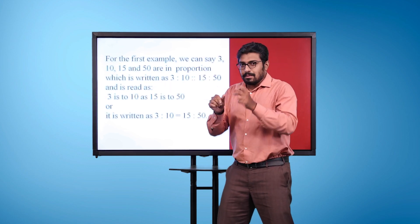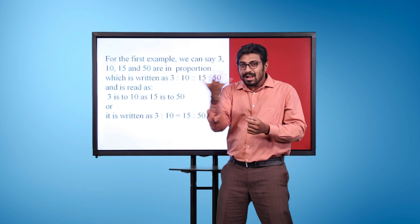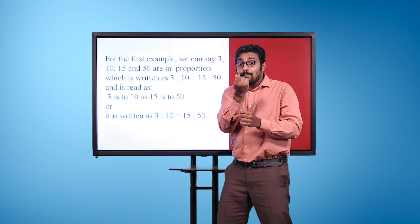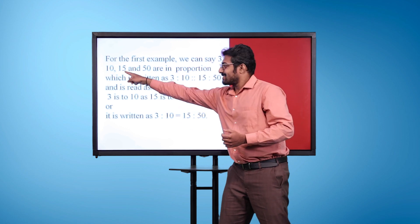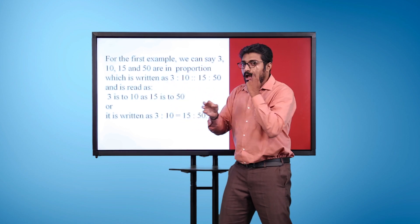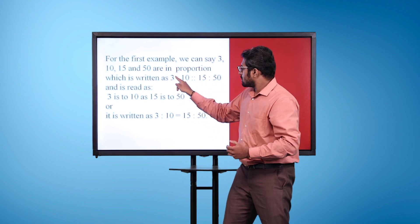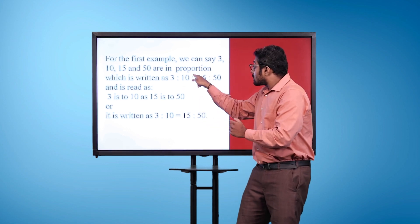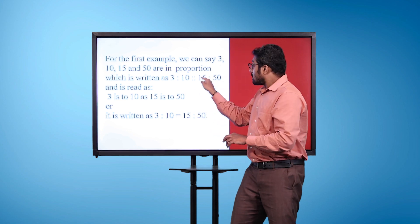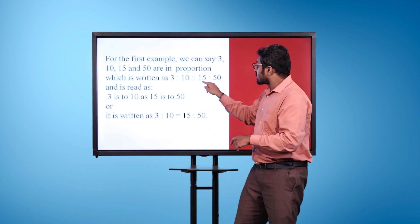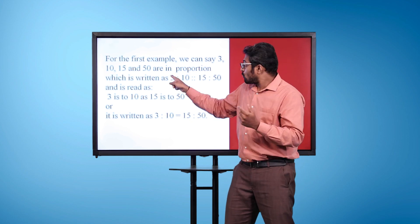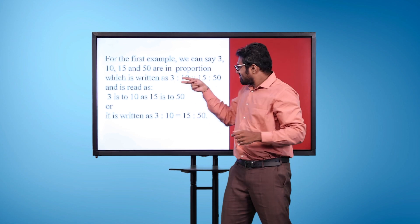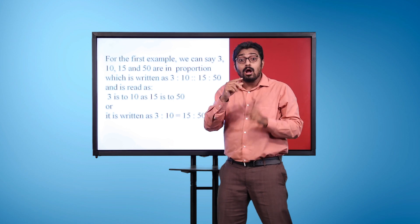For the first example, we can say 3, 10, 15, and 50 are in proportion, which is written as 3 is to 10, double colons, 15 is to 50, and is read as 3 is to 10 as 15 is to 50, or it is written as 3 is to 10 is equal to 15 is to 50.